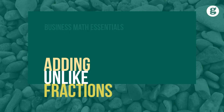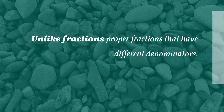Proper fractions that have different denominators are known as unlike fractions. Unlike fractions must be converted to like fractions before they can be added. Let's take a look. Unlike fractions are proper fractions that have different denominators.